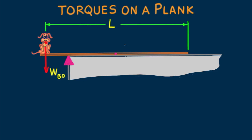Here's where the concept of torque and center of gravity come in. The weight of the plank acts as if it's concentrated at the plank's center of gravity. When the plank is at its maximum safe overhang distance, the torque due to the weight of Bo just balances out the torque due to the weight of the plank.